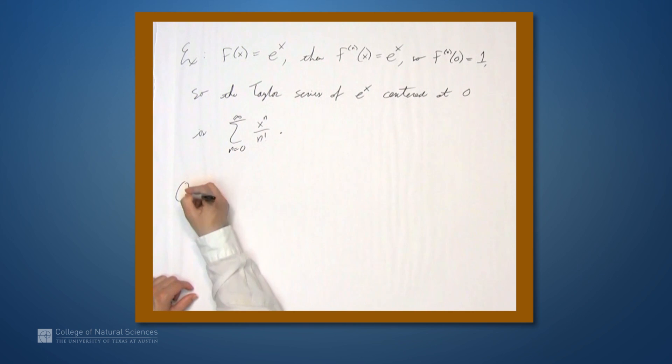Now one question that I've left unanswered. Does e to the x actually equal the sum from n equals 0 to infinity, x to the n over n factorial? In greater generality, when does a function equal its Taylor series?